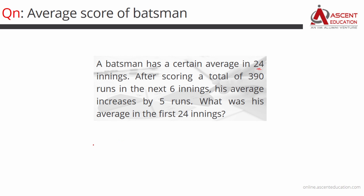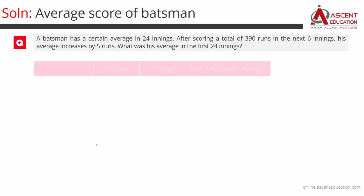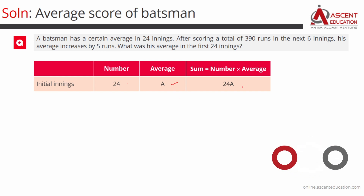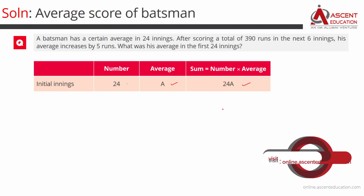Let's go to the standard framework. We use the columns: Number, Average, Sum. For the first 24 innings, the average is unknown, so we assign a variable A to it. The sum of his runs in these 24 innings will be number into average, which is equal to 24A.